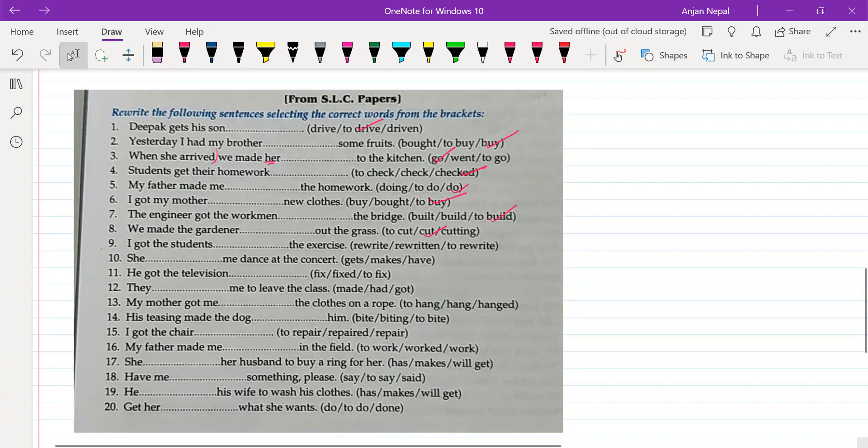Next, Vinayak. I got the students to rewrite the exercise. Who made you dance at the concert? She made me dance. He got the television fixed. He made me to write.